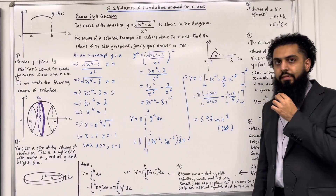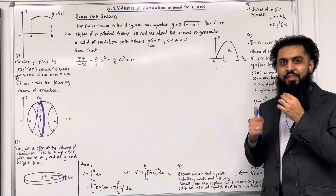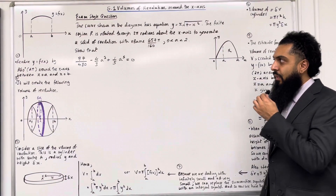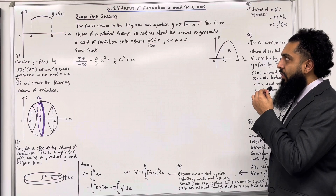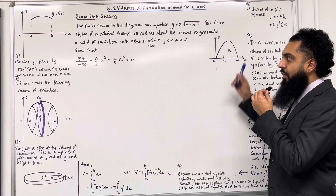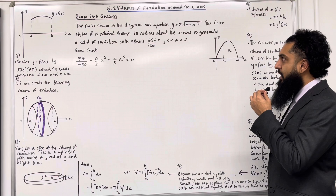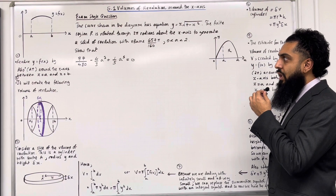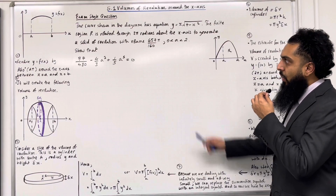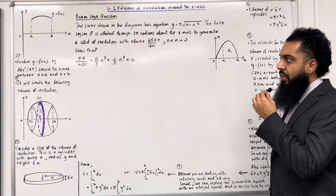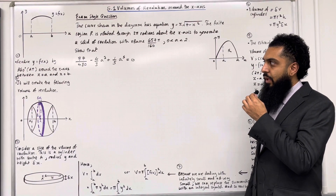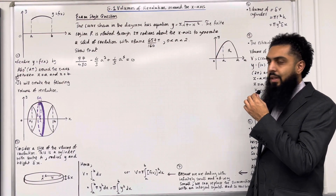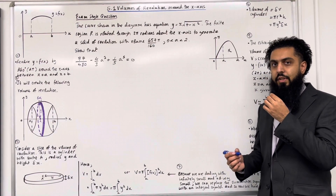This completes the first exam-style question. Here is another exam-style question. The curve shown has equation y equals x times square root of (4 minus x squared). The finite region R is rotated through 2 pi radians about the x-axis to generate a solid of revolution with volume 657 pi over 160, where a is more than 0 but less than 2. Show that 77 over 480 minus 4 over 3 a cubed plus 1 over 5 a to the power 5 equals 0.